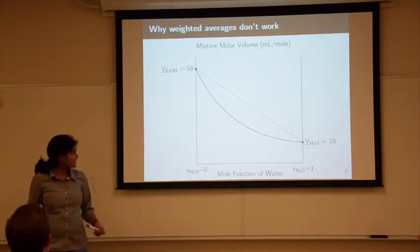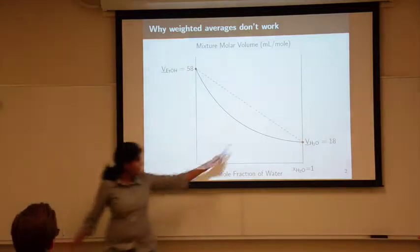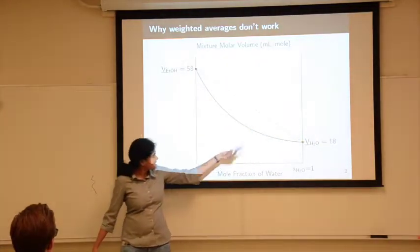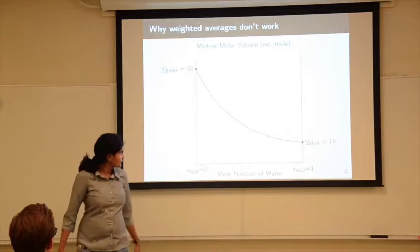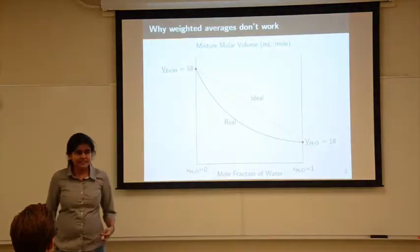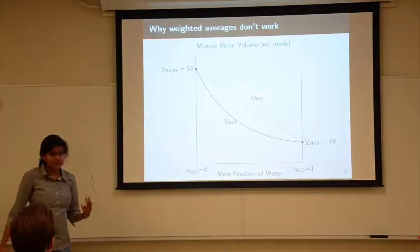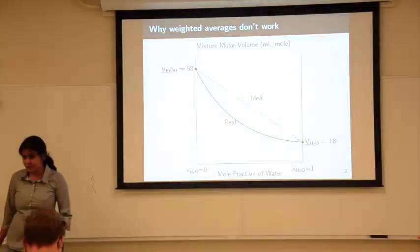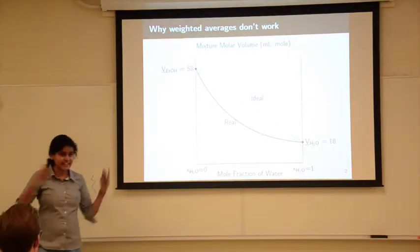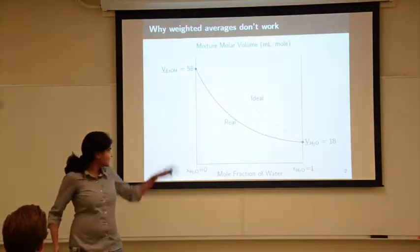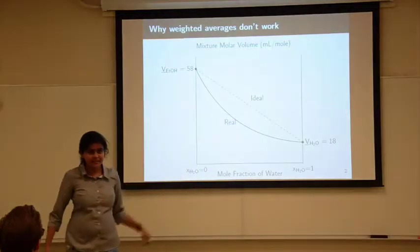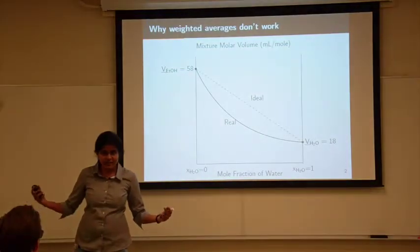What's happening here is a negative deviation from this linear dependence through all compositions. We are seeing two types of behavior. The linear dependence of mixture volume on composition represents ideal behavior, and this concave curve represents real behavior.